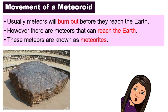Let's review the different names one more time. When they are in outer space, they are called meteoroids. Once they enter into our sky, or our atmospheric layer, they are called meteors. If they do not burn up and they reach the Earth — as you can see from this picture, a big piece of stone — they are called meteorites.